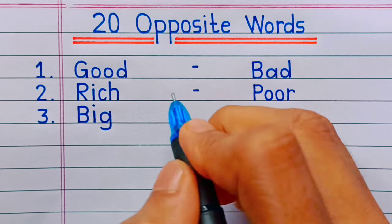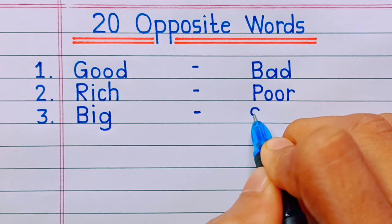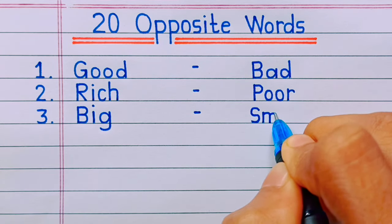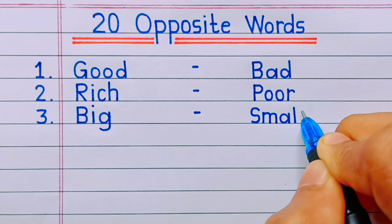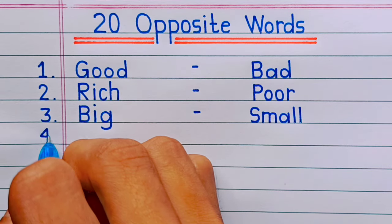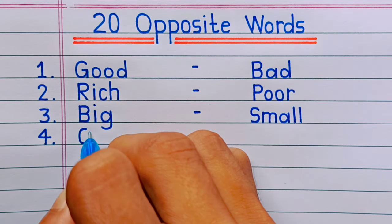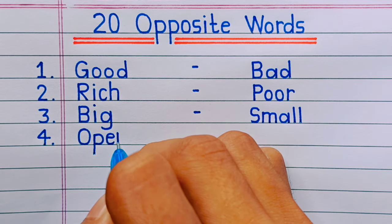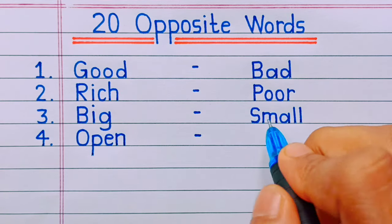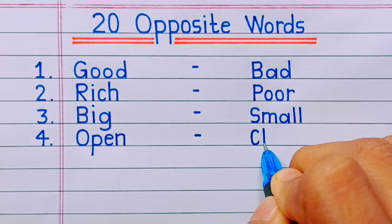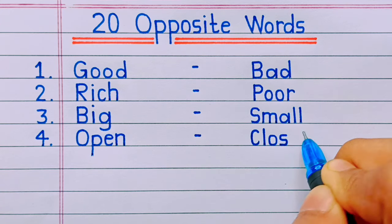Number three: big, small. Number four: open, close.